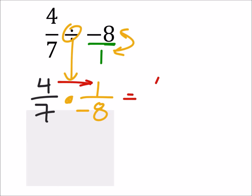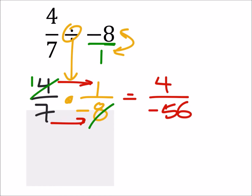4 times 1 is 4, and 7 times negative 8 is negative 56. Of course, you could have simplified back there — you could have reduced the 4 and the 8. In this case, though, I didn't, so I'm going to have to divide both by 4, which is okay. And that would be 1 over negative 14.